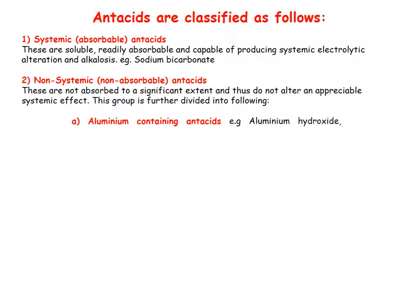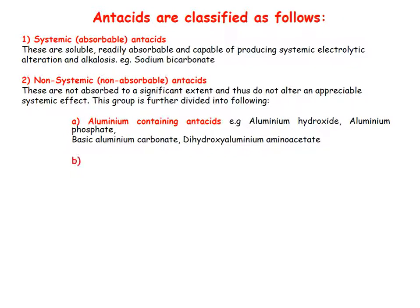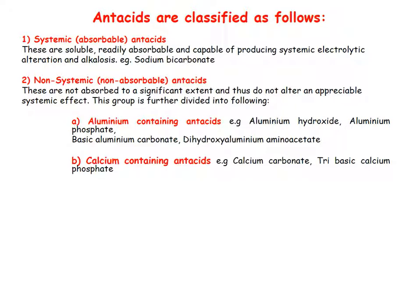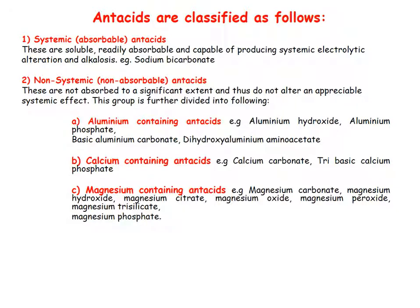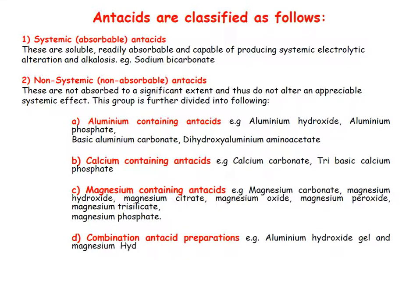Subclasses of non-systemic antacids: first, aluminium-containing antacids such as aluminium hydroxide, aluminium phosphate, basic aluminium carbonate, and dihydroxy aluminium amino acetate. Second, magnesium-containing antacids: magnesium carbonate, magnesium hydroxide, magnesium citrate, magnesium oxide, magnesium peroxide, magnesium trisilicate, and phosphate. Combination antacid preparations include aluminium hydroxide gel with magnesium hydroxide and aluminium hydroxide gel with magnesium trisilicate.